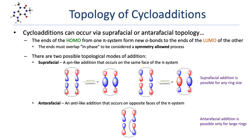In a cycloaddition, the ends of the HOMO from one pi system form new sigma bonds to the ends of the LUMO from the other pi system. The ends must overlap in phase in order to form bonding interactions, which is considered a symmetry-allowed process. The in-phase overlap at both ends of each pi system can occur with one of two possible topologies: suprafacial and antarafacial. A suprafacial addition is a syn-like process in which the two bonds form on the same face of the pi system.